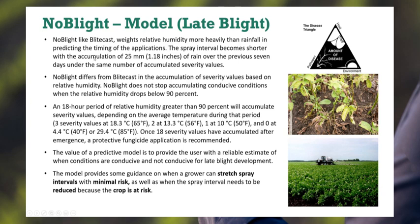The No-Blight model, like Blightcast, weighs relative humidity more importantly than rainfall events, so the spray interval becomes shorter with accumulation of an inch of rain over the previous seven days under the same number of accumulated severity values. No-Blight differs from Blightcast in that accumulation of values is based on relative humidity — it does not stop accumulating conducive conditions when humidity drops below 90%. That's a critical factor. In an 18-hour period, relative humidity greater than 90% will accumulate severity values dependent upon average temperature: three values at 18.3°C, two at 13.3°C, one at 10°C, and zero at or above 29°C. Once the severity in this case reaches 18 through accumulation, that's when the first fungicide application is recommended.